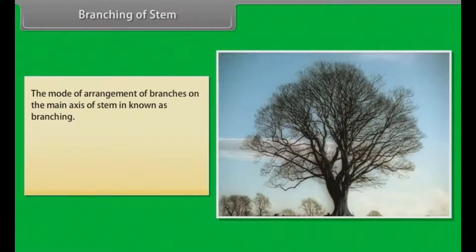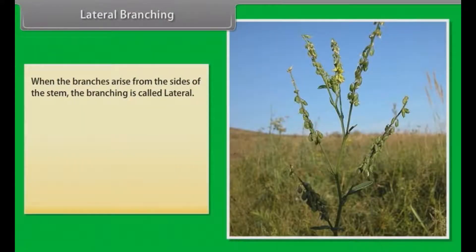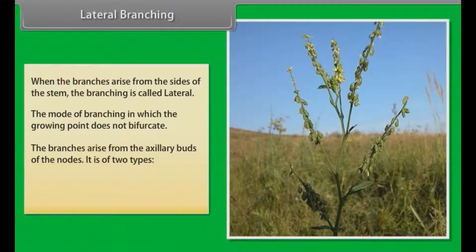The mode of arrangement of branches on the main axis of stem is known as branching. The two principal types of branching are lateral branching and dichotomous branching. In lateral branching, when the branches arise from the sides of the stem, the branching is called lateral. The mode of branching in which the growing point does not bifurcate — the branches arise from the axillary buds of the nodes.